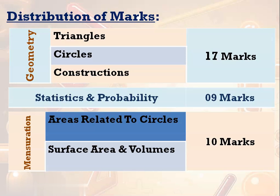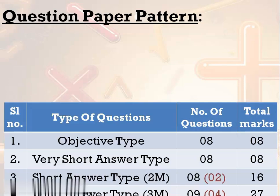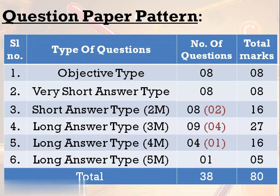This is the mark distribution given by the board. Now let's go to the question paper pattern. We all know the pattern because already we have written 2 preparatory examinations. It consists of 8 MCQs — objective type questions, each carrying 1 mark — and 8 very short answer type questions for 8 marks. So in these 16 marks we have 1-mark questions, and another 8 marks is given for 2-mark questions.